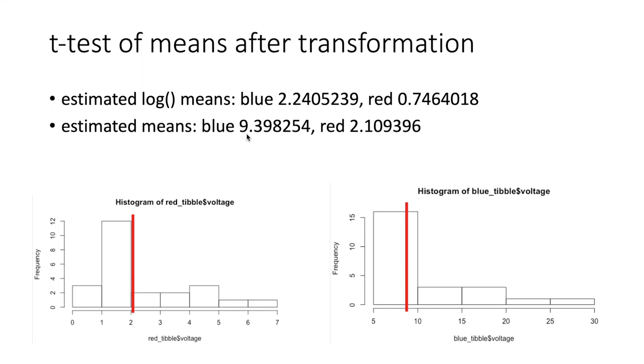The estimated average for blue was about 9.4, and if we look here we see 9.4 is pretty close to the peak of this histogram skewed though it is.